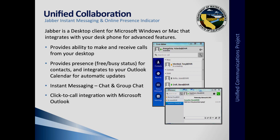Unified collaboration is the Jabber desktop client for Windows and Mac that integrates with your desk phone for advanced features. It provides the ability to make and receive phone calls from your desktop, shows presence — free or busy status — for your contacts, integrates your Outlook calendar for automatic updates, and includes instant messaging, chat and group chat, and click-to-call integration with Microsoft Outlook. Note that for Mac, the click-to-call integration with Outlook is not available, though the Jabber client otherwise works.